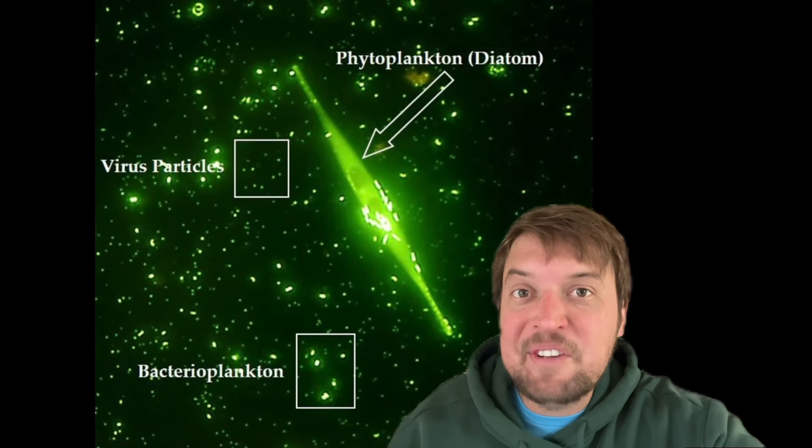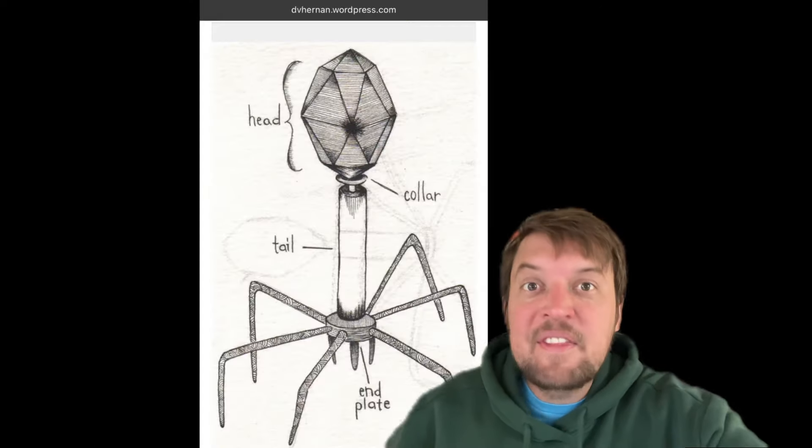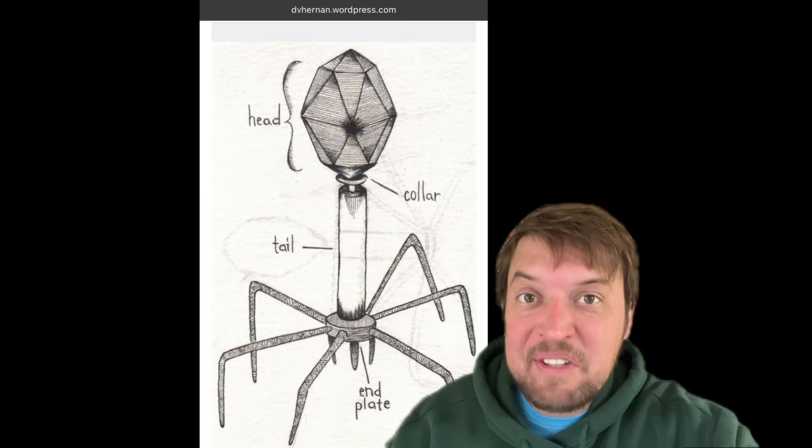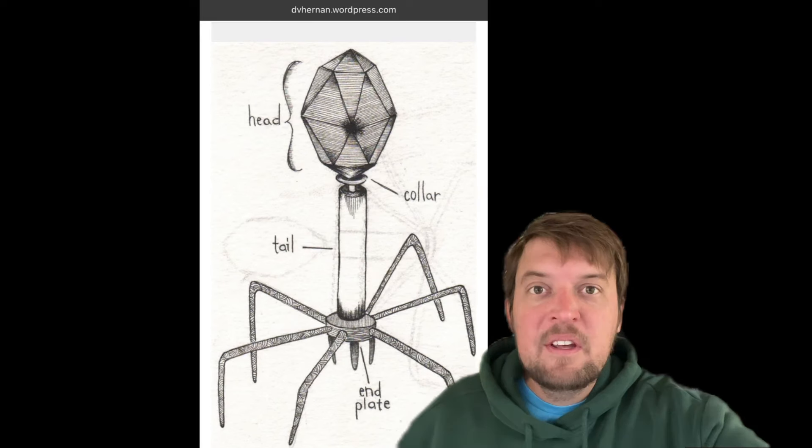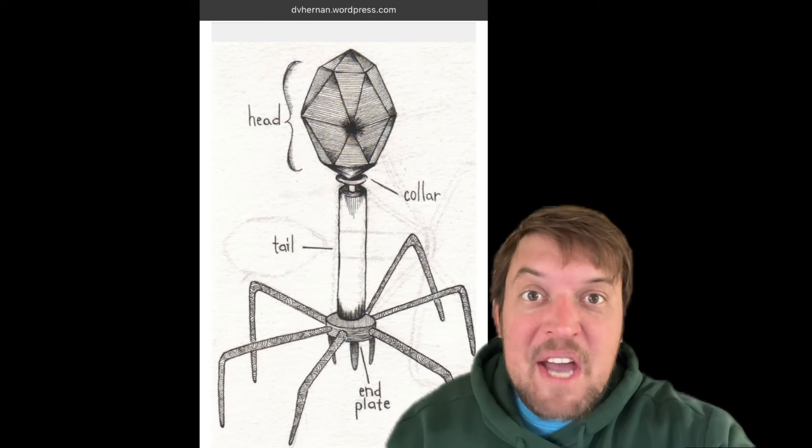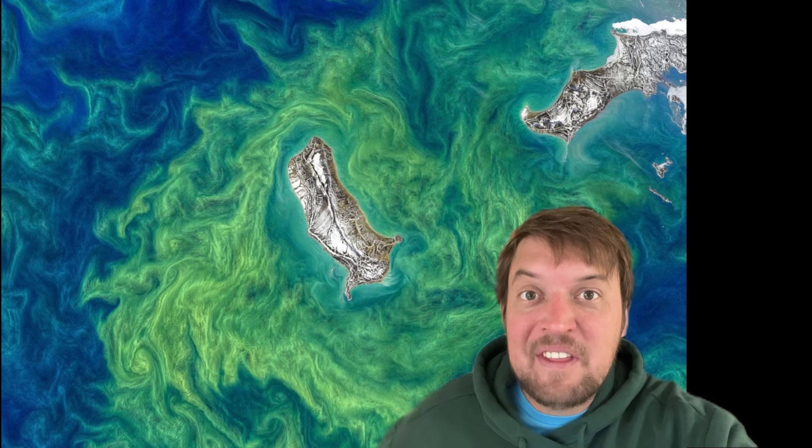Yet another possible explanation is either called the boom and bust or kill the winner hypothesis. The idea is that viruses mediate how successful any single species of plankton can be, because it's estimated that viruses kill around 20% of all the bacteria in the ocean every single day. And when conditions are just right for any specific species, they have what's called a bloom and outcompete all the other species of plankton.